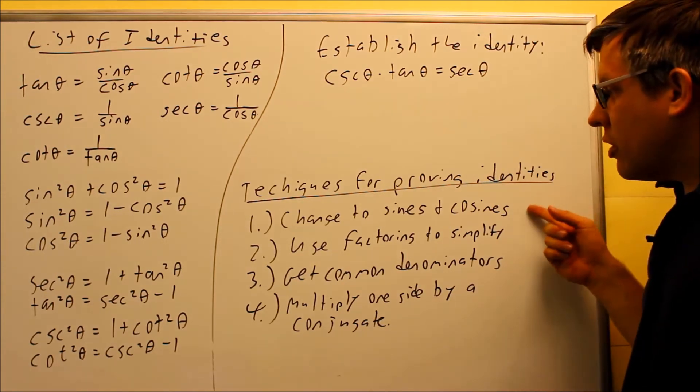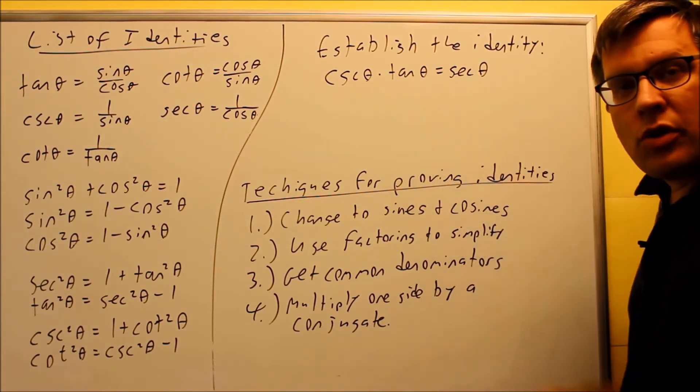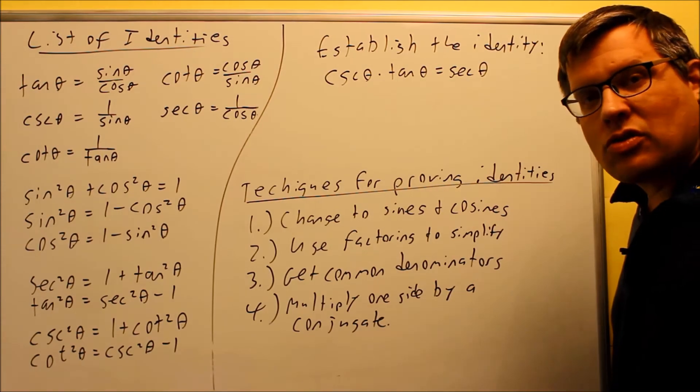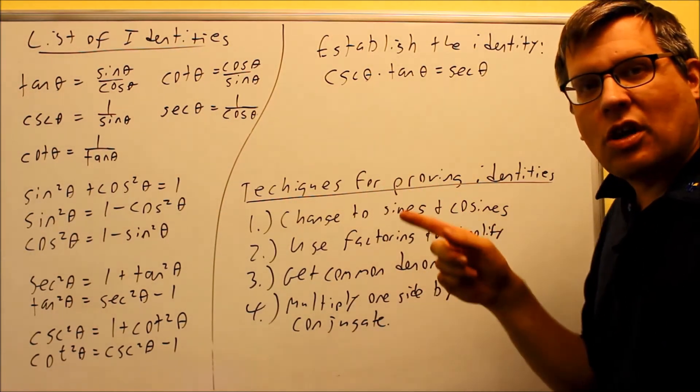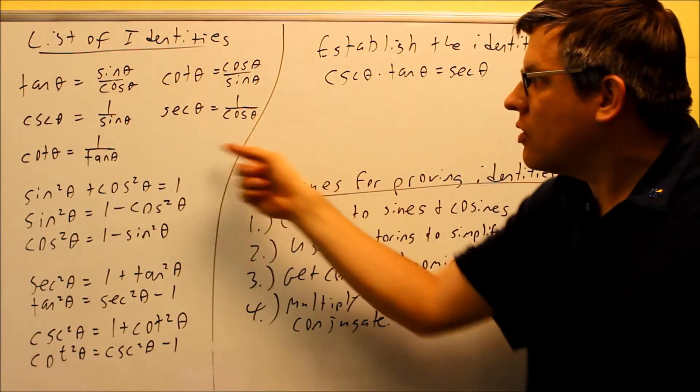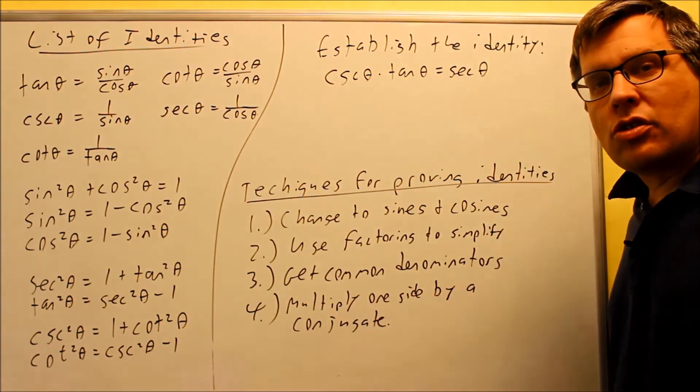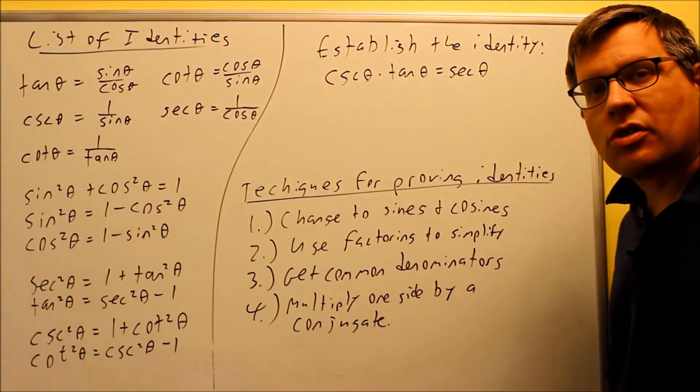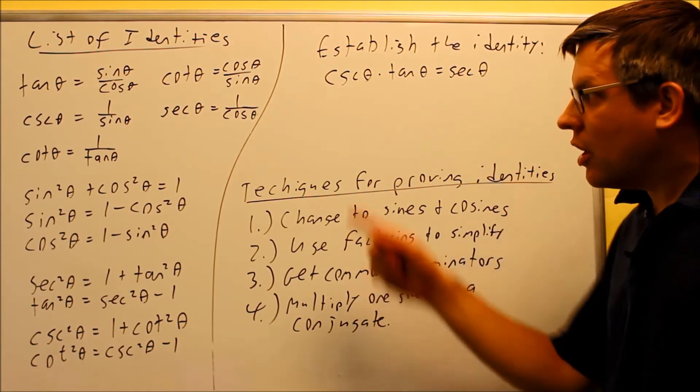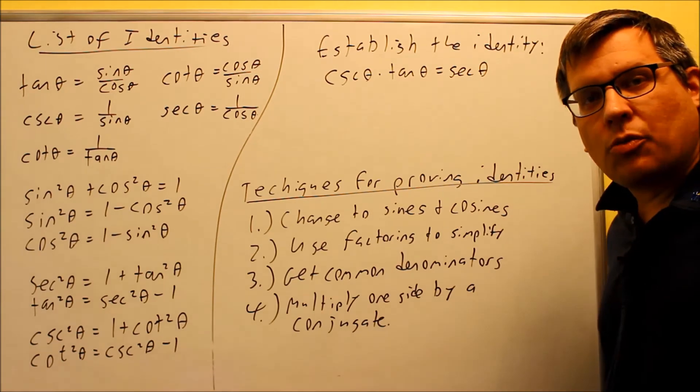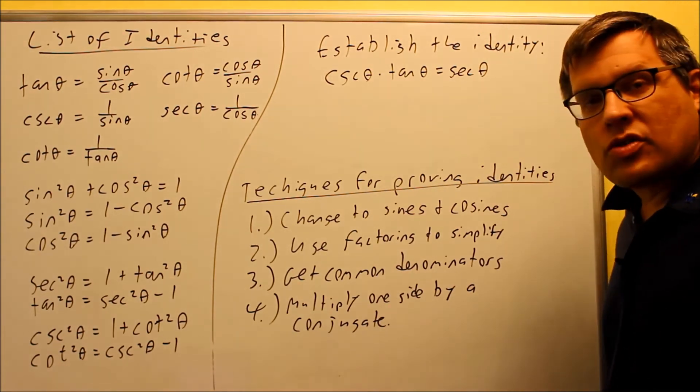We're going to refer back to these techniques. The first thing that you want to do is if the problem looks like we can change it into sines and cosines, you want to do that. So how do you change into sines and cosines? We're going to use these identities right here. So these top identities are ones that will allow you to change everything into sines and cosines. A lot of times, if you change into sines and cosines, then you'll be able to get certain things to cancel and you'll be able to show that one side equals the other.